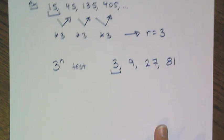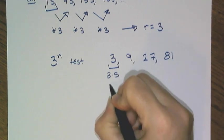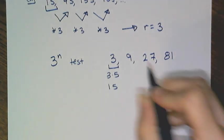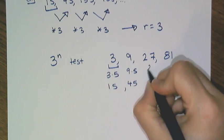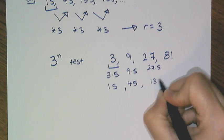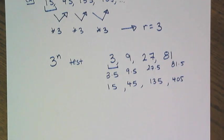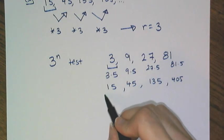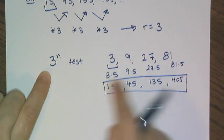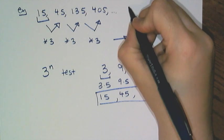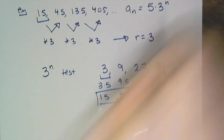Another option is to multiply by 5. So if I take 3 times 5, I get 15. And then 9 times 5 gives me 45. And then 27 times 5 gives me 135. And 81 times 5 gives me 405, which means I have found the sequence by taking this 3 to the nth power and multiplying it by 5, which means the explicit formula that I need is a sub n equals 5 times 3 to the n.